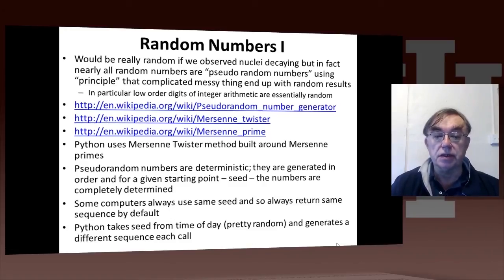So here are some Wikipedia references. Basic one on pseudorandom number generators, one on the particular version, the Mersenne twister used in Python, and then an actual discussion of Mersenne primes of the form 2 to the p minus 1, which are actually used in that twister method.